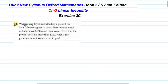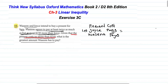Let's start question number 12. Wasim and Joy intend to buy a present for Sarah. Wasim agrees to pay at least twice as much as, but at most 150 dollars more than, Joy. Given that the present costs no more than 210 dollars, what is the greatest amount Wasim has to pay?